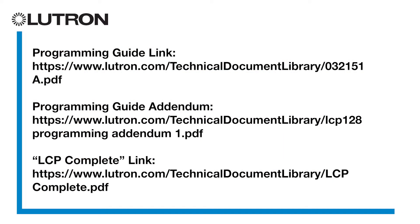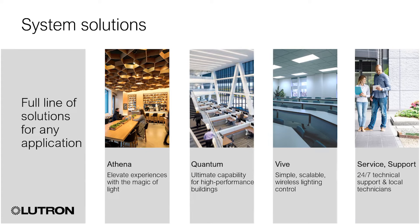The LCP and XPS systems we just talked about are just one of several commercial systems offered by Lutron. Additional information on the LCP and XPS systems can be found at the links on screen. Lutron offers several other lighting control systems for new and existing installations.